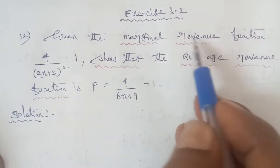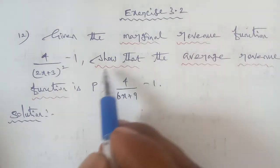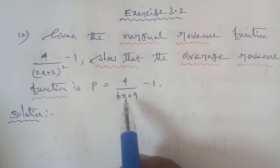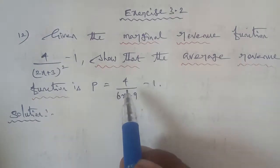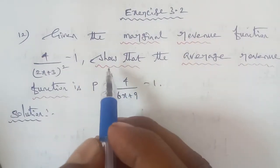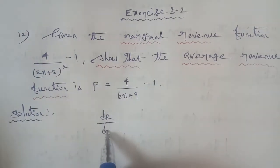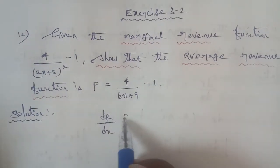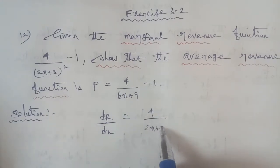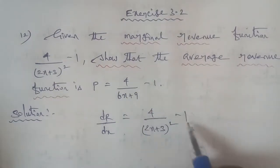So, we will find the marginal revenue function. Marginal revenue, the symbol is dr by dx. So, dr divided by dx equals 4 by (2x plus 3) the whole squared, minus 1.